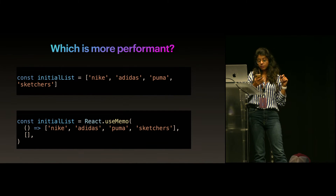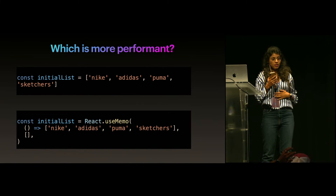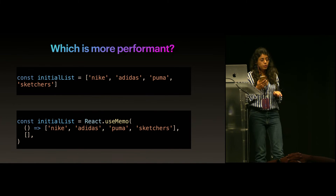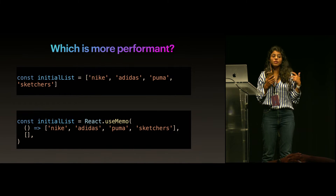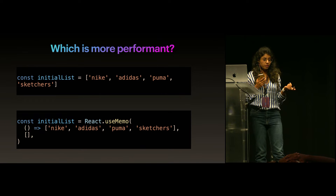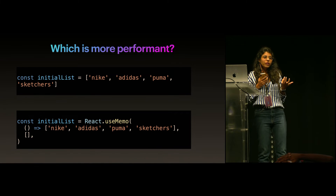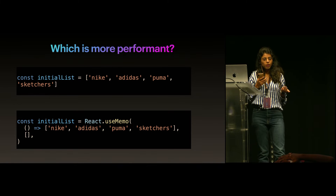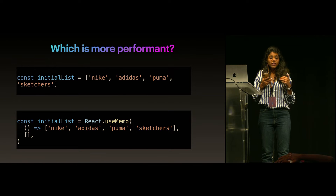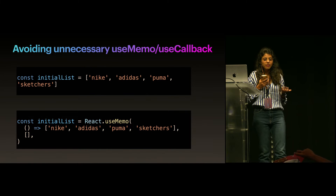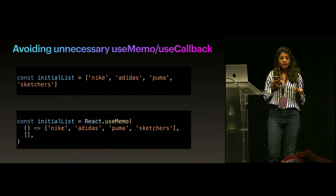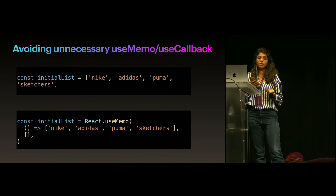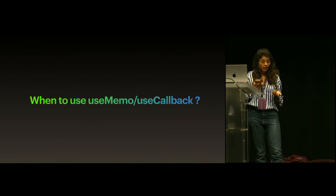For a list, wrapping it inside useMemo also means the second version does more computations. So it's not always ideal to wrap everything inside useCallback or useMemo — we can avoid some unnecessary usage. But when should we actually use useMemo or useCallback? Let's see a bunch of examples.